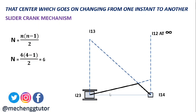I₂₃, between links 2 and 3, is found from the extension involving links 1 and 4. I₂₄ is obtained where links 3 and 1 are extended, giving that point. Finally, I₃₂ (equivalently I₂₃) is located between link 3 and link 2. These are the 6 instantaneous centers of the slider crank mechanism, and you should remember where each one lies.